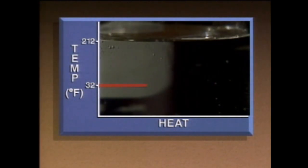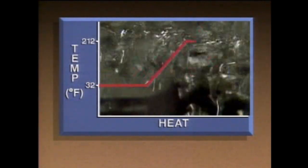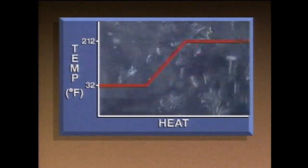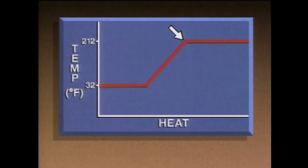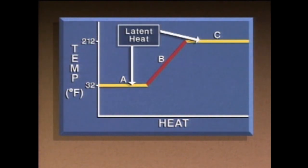Now that the ice is melted, the addition of heat does produce a temperature change. At 212 degrees, the water boils into steam, but the temperature stays the same — the water undergoes a phase change, not a temperature change. At 212 degrees, the latent heat causes the molecules to move fast enough to overcome the molecular forces holding them together. Section B on the graph represents sensible heat, because the temperature of the water changes as a result of heat transfer. Sections A and C represent latent heat transfer, because there are no temperature changes, only phase changes.